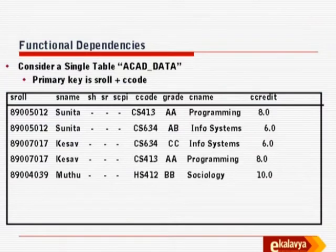If I have a single table like that, everything is okay. For example: roll number 89005012 Sunita is registered for CS413 (a course on programming) and got an AA grade — the course has 8 credits. Sunita has also registered for CS634 and got an AB grade in Information Systems, worth 6 credits. And Keshav Nauri, another student, is registered for this course, etc. Observe that all relevant information seems to be captured properly. One may wonder why the ER model with separate student entity, course entity, and 'registers' association was needed — this seems perfectly fine.